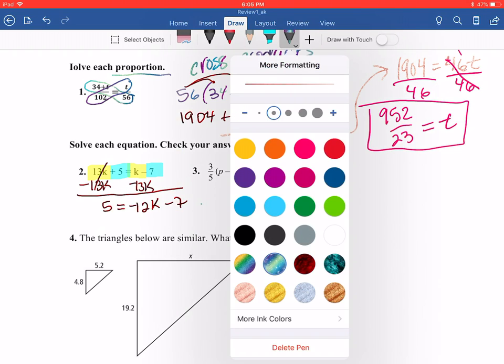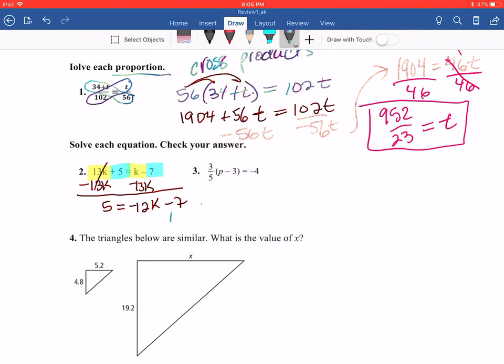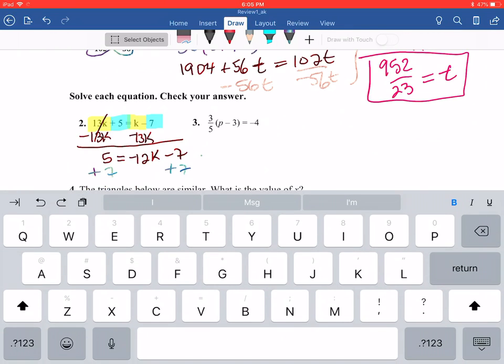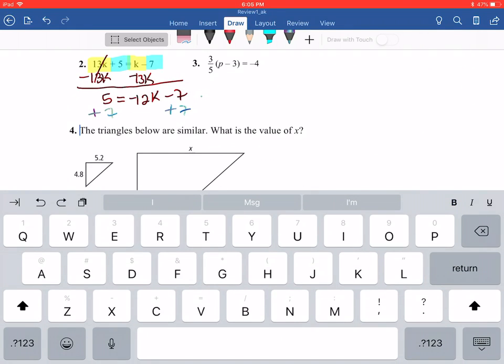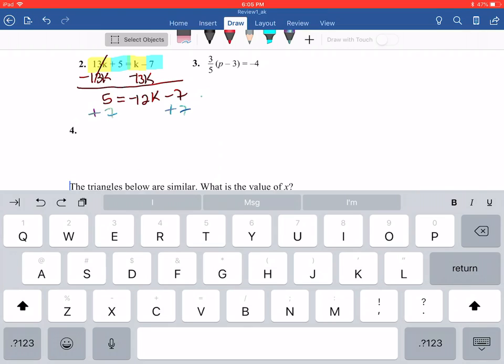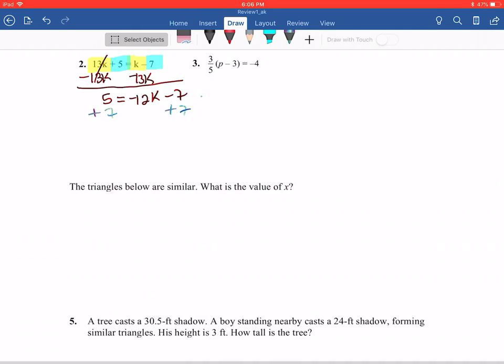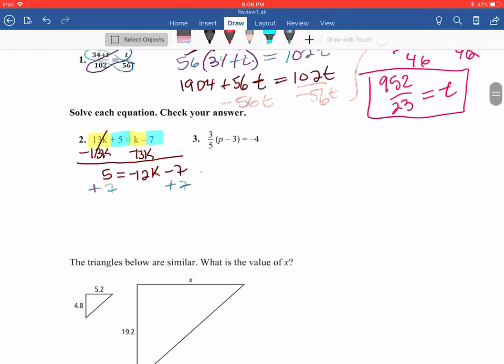So that's going to give me 5 is equal to -12k minus 7. Now I'm going to add the seven to move that, because the inverse of negative seven is positive seven. And I'm going to rewrite this. Yikes, I'm in the room. Hold on, let me see. I lost my number. It's all right. We got room here now.